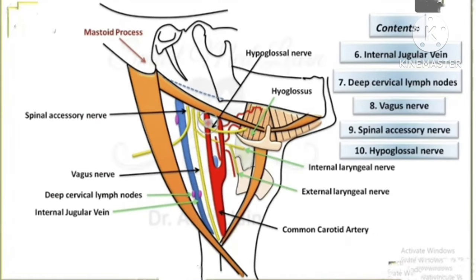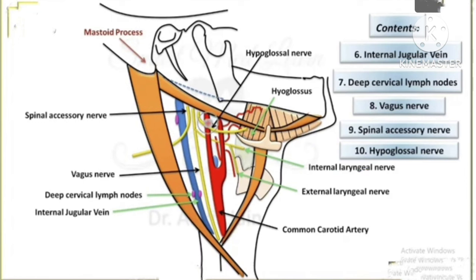The vagus nerve — the 10th cranial nerve — runs alongside the common carotid artery and internal jugular vein. From the vagus nerve, two branches arise: the internal laryngeal nerve, which carries sensation, and the external laryngeal nerve. The 11th cranial nerve is the spinal accessory nerve and the 12th cranial nerve is the hypoglossal nerve. So in total, three cranial nerves — the 10th, 11th, and 12th — are seen in the carotid triangle.